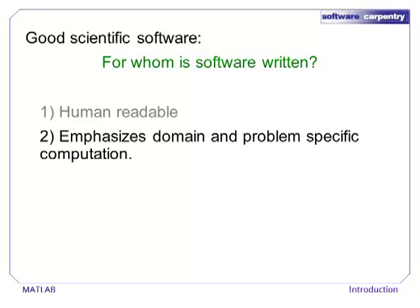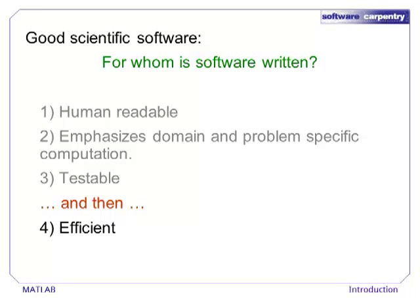Software written for humans emphasizes what is important. Usually, we write code to solve particular problems in particular domains. Good code should emphasize those domains rather than the low-level algorithms that are utilized. Good code should always be testable, which means that its purpose must be clear enough that tests can be written. Finally, good code should be efficient. We will see how MATLAB provides efficiency without sacrificing readability and testability.